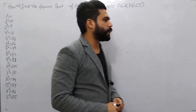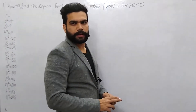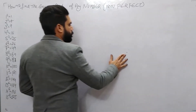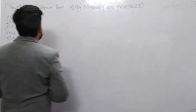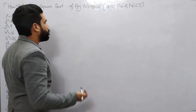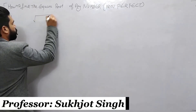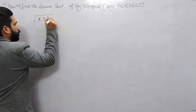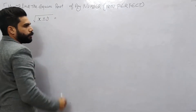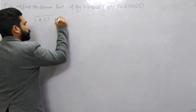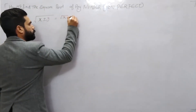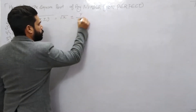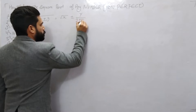In our third video, we will do non-perfect square root of any number. It's a simple method — not difficult to do. The formula is called x plus or minus y, and it is written as: root x ± y over 2 root x. We will discuss what x and y are.